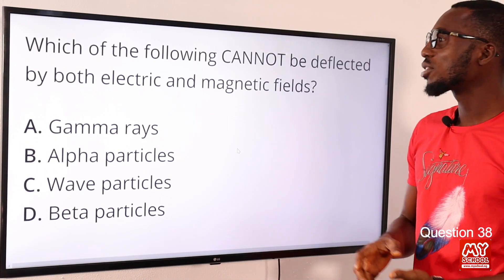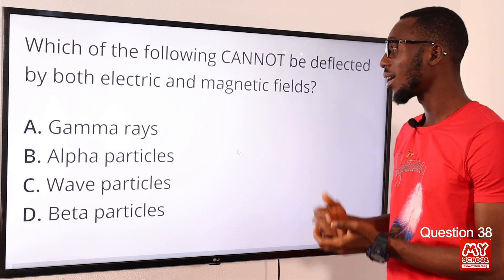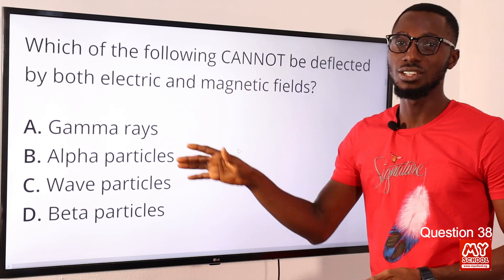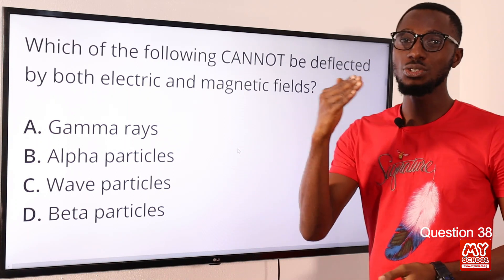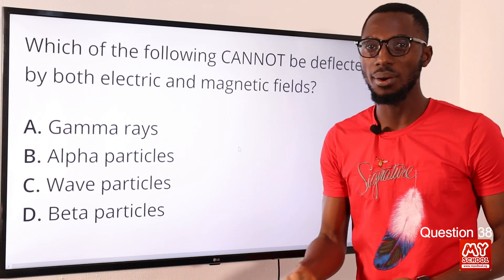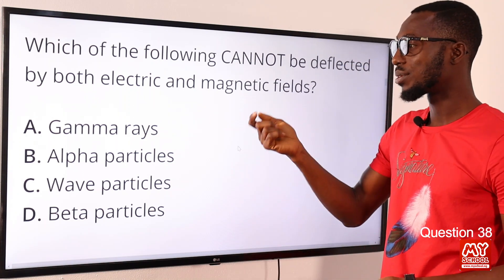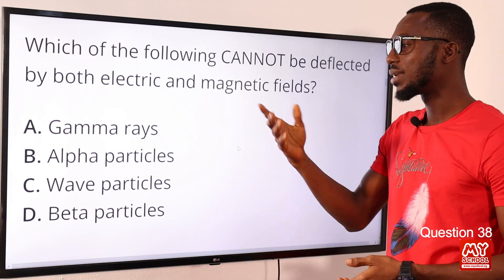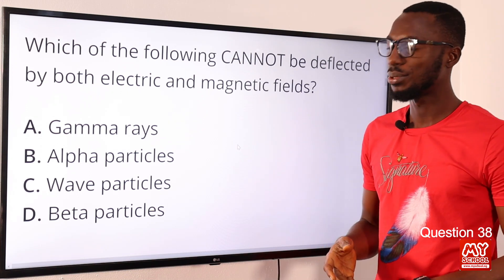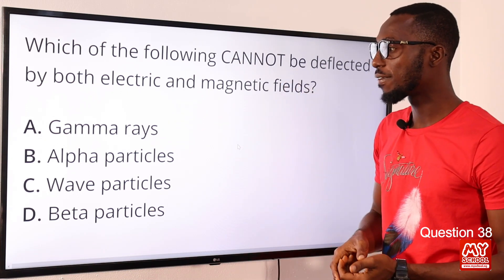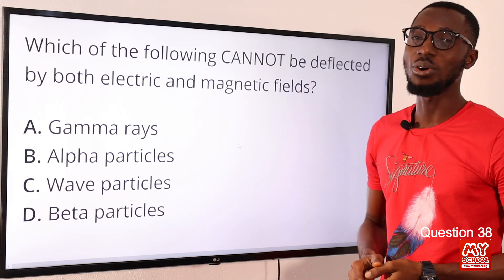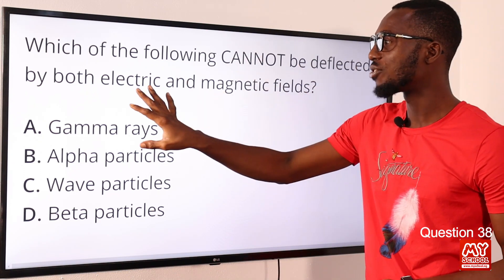Question 38: Which of the following cannot be deflected by both electric and magnetic fields? The answer is gamma rays. Gamma rays are electromagnetic radiation similar to X-rays but with a shorter wavelength and greater penetrating power, emitted by radioactive substances such as cobalt-60. Since gamma rays are electrically neutral, they cannot be deflected by electric or magnetic fields. The correct option is option A.